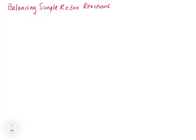In this video, we're going to look at balancing simple redox reactions, and we're concerned with two different types for the most part. These are going to involve either displacement reactions or combination reactions. The textbook does a really good job of talking about the different types of reactions, so you should read those sections, but we don't actually go over them in lecture.